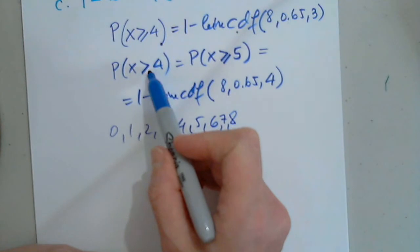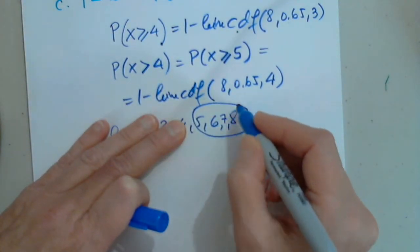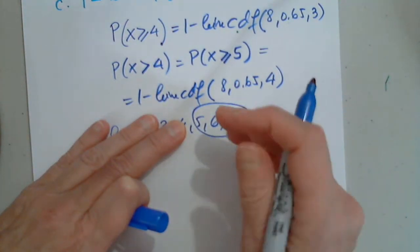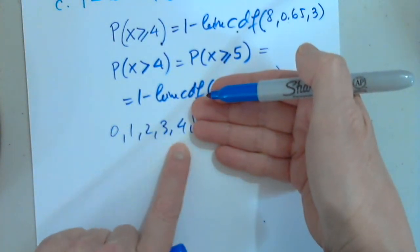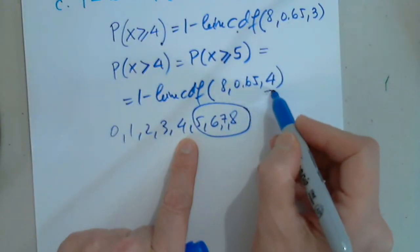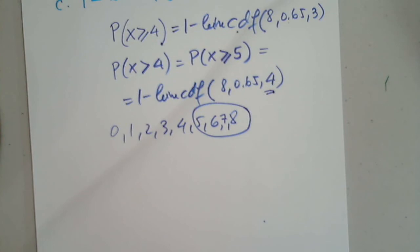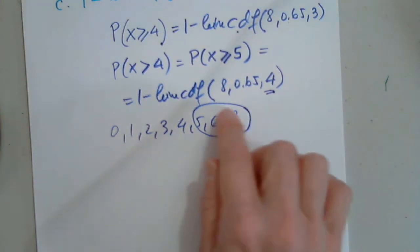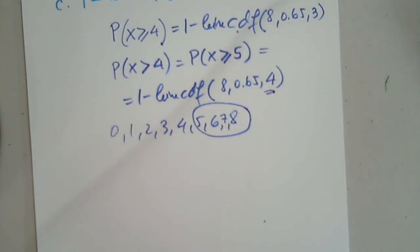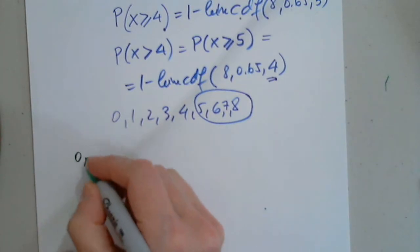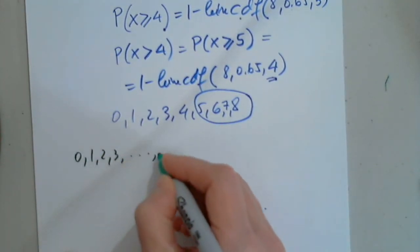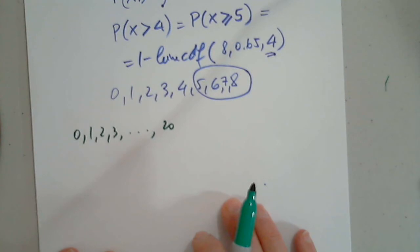So, in this case, I have 0, 1, 2, 3, 4, 5, 6, 7, 8, okay? So, I want strictly greater than 4, which means this. But in order to determine this, I have to subtract from 1 all these. 1 minus binomial CDF of 4.